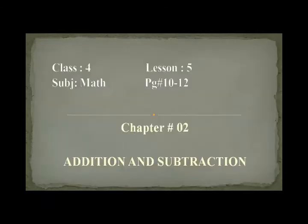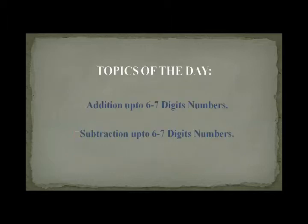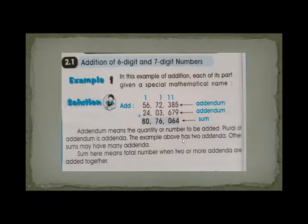Open your books and look at here on your screens. The topics of today's lesson are: number 1, addition up to 6 to 7 digit numbers; and number 2, subtraction up to 6 to 7 digit numbers. Hope you all know very well about addition and subtraction from your previous classes, so we are starting from here.